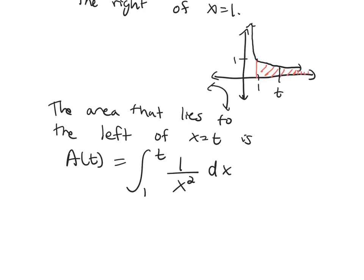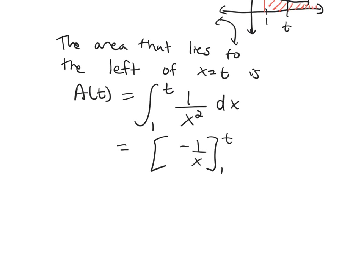What do we get when we integrate 1 over x squared? Remember, think of it as x to the negative 2nd, add 1 to the power, divide. So what you're getting is going to be negative 1 over x. And then you plug in your two numbers here. So you're going to get negative 1 over t minus a negative, so plus 1 over 1, which is 1 minus 1 over t.